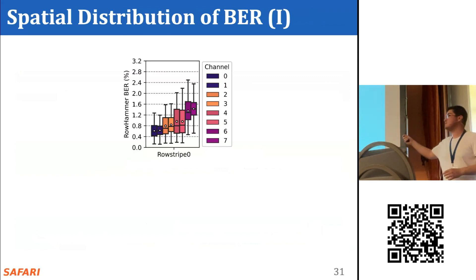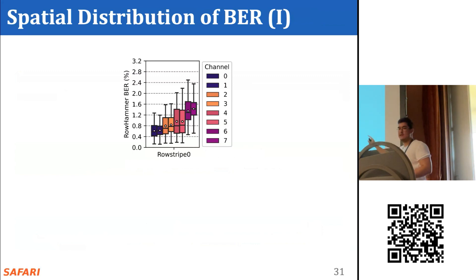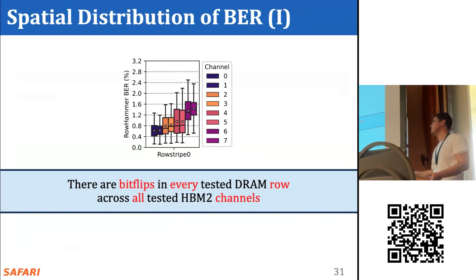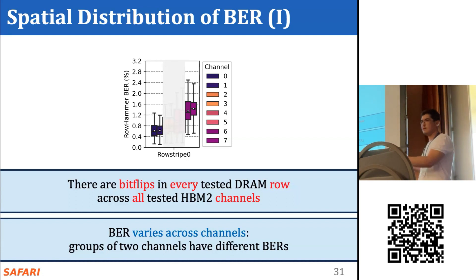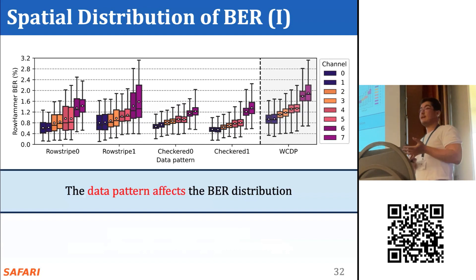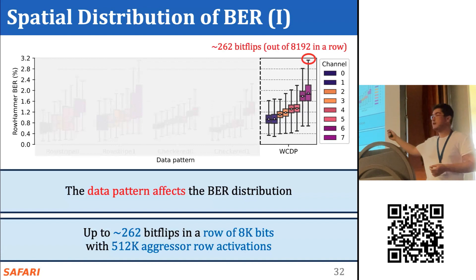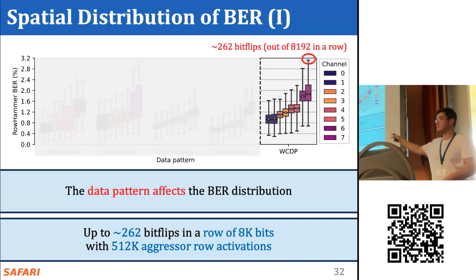This figure shows the RowHammer bit error rate distribution across rows in a channel on the y-axis, with different data patterns on the x-axis. Different bars show the distribution for different channels. We observe bit flips when we test DRAM across all HBM2 channels. We also see that bit error rate varies across channels — we find groups of two channels with similar bit error rates, and these groups differ from each other. The data pattern has an effect on the bit error rate distribution. For the worst-case data pattern, we observe up to around 260 bit flips in a row of 8,000 bits when using 512,000 activations.